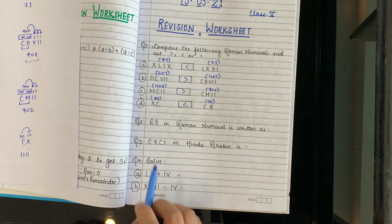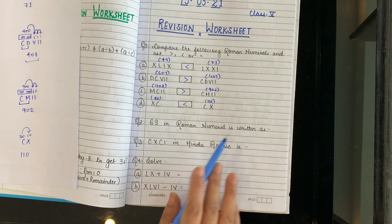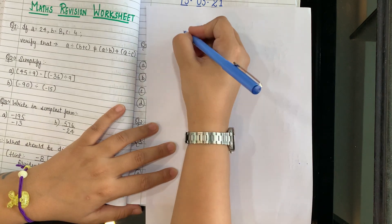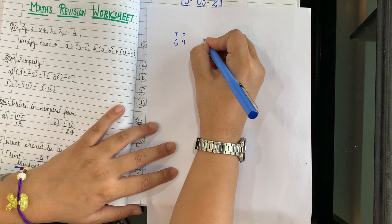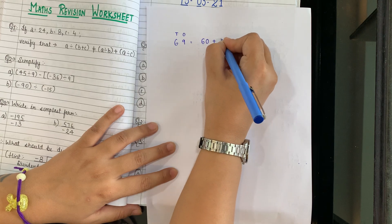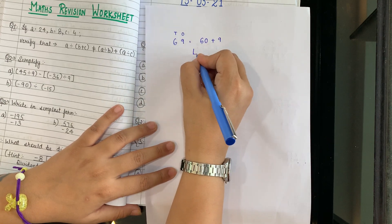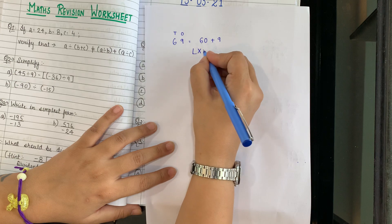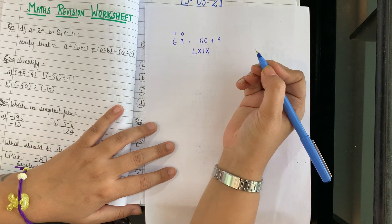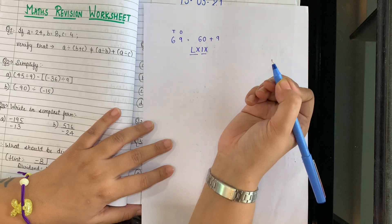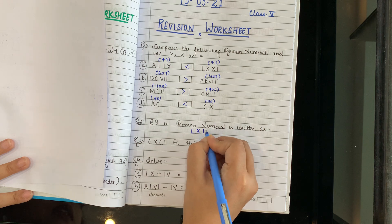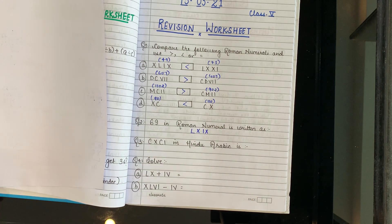Now question number 2: 69 in Roman numeral. Jab bhi kisi number ko hum Roman mein likhte hain, write its place value and expand it. 69 = 60 + 9. How do we write 60? 50 + 10 = LX. How do we write 9? IX. So 69 = LXIX.